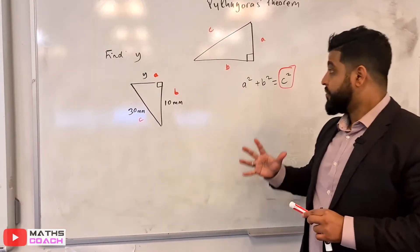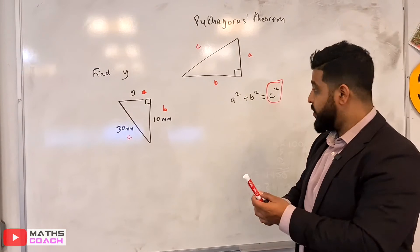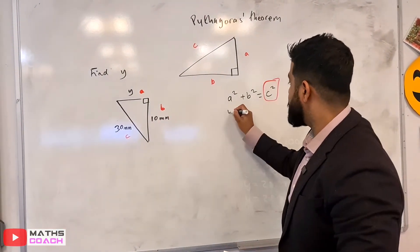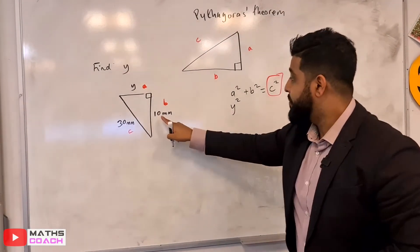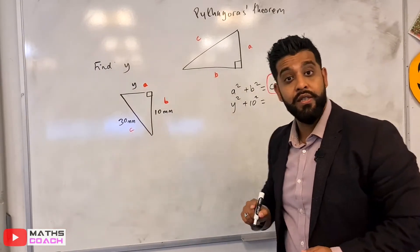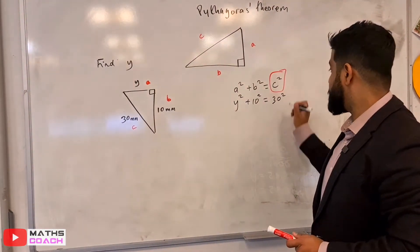Right. So now I am going to apply my rules. So what is A squared? A squared in this case is Y. So therefore Y squared. B is 10. So that's going to be 10 squared. And C squared, I'm given this time, which is 30. So that's going to be 30 squared.